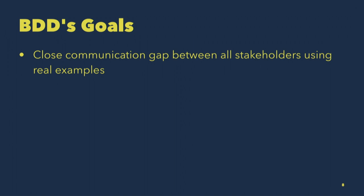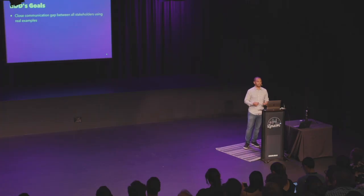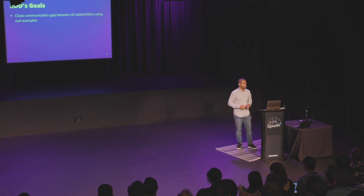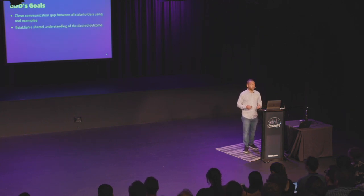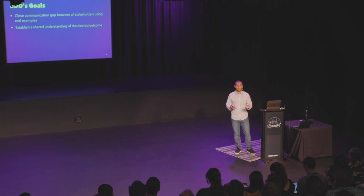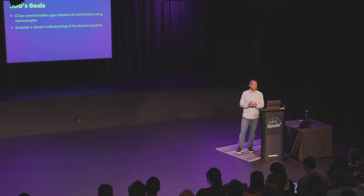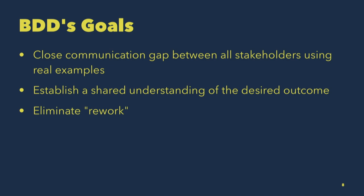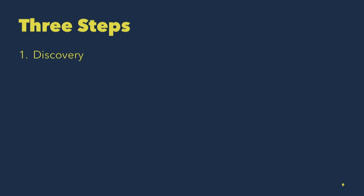The goal of behavior-driven development is to close the communication gap between all the stakeholders using real examples — getting concrete examples rather than hand-wavy requirements. Also, to establish a shared understanding of the desired outcome, because a developer's understanding might be different from what the business person is expecting. And to eliminate the rework of having to go back and make those changes. It happens in three steps: discovery, formulation, and automation.